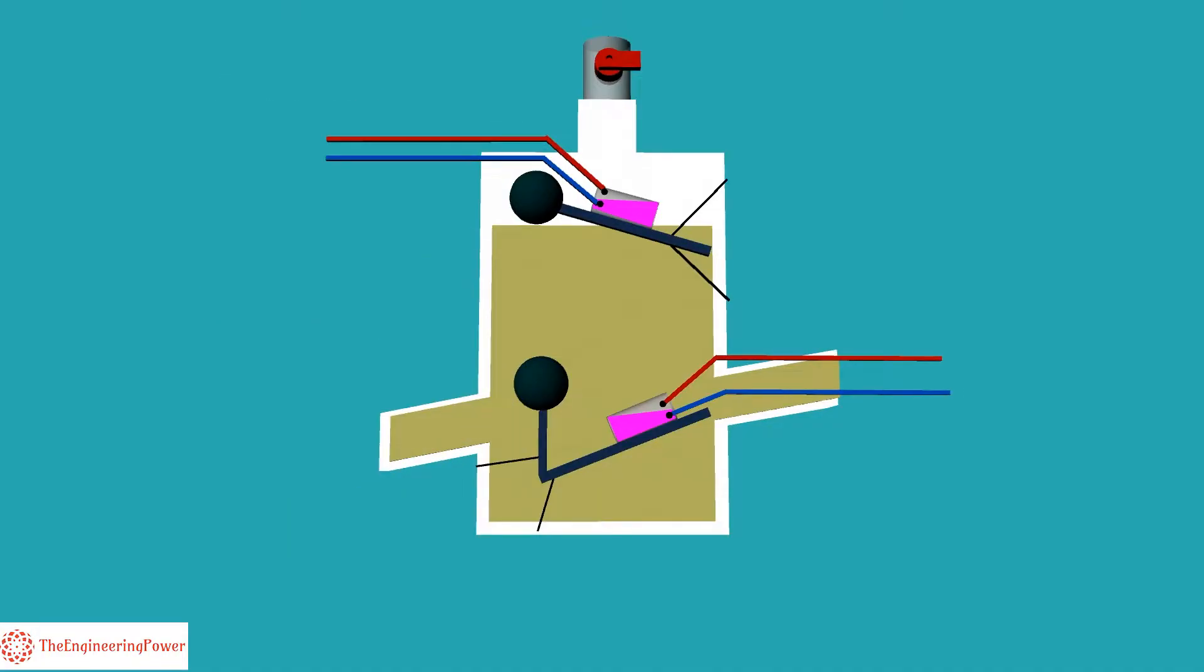First we explain the working of the alarm function of the Buchholz relay. The upper float is attached with the hinge in such a way that its movement towards up and down side is controlled by the oil level in the container of the Buchholz relay.